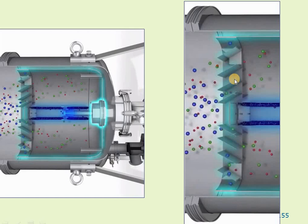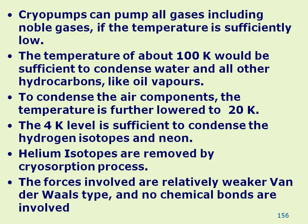Usually water vapor, oil vapor, and similar molecules condense over these cryopanels at around 100 Kelvin. Cryopanels can trap all gases, not water vapor alone — even noble gases. At a sufficiently low temperature, water and other vapors like oil vapors condense. Air components including nitrogen and oxygen, as well as noble gases like helium, must each be condensed specifically.